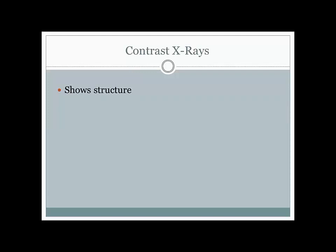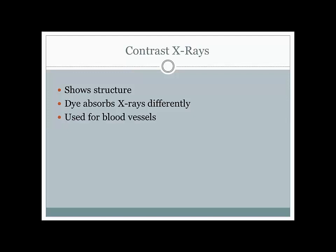The way contrast x-rays work is you're either injected with or you drink a radioactive dye that gets absorbed into the bloodstream. As that blood circulates throughout your body and up into your brain, you can take pictures of it with x-rays—the same type you'd use to check if a bone was broken. These x-rays are absorbed differently by the dye than by surrounding material, so what this really lets you do is see blood vessels in the brain.